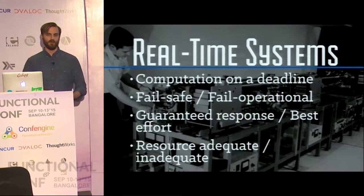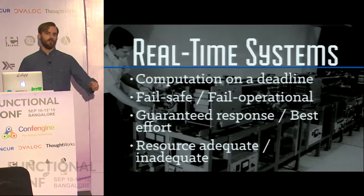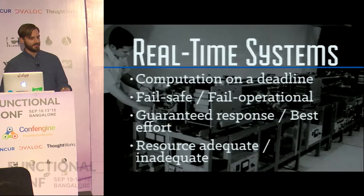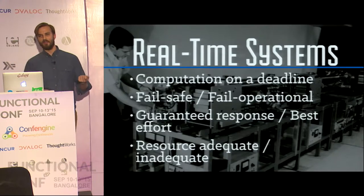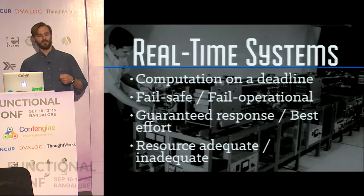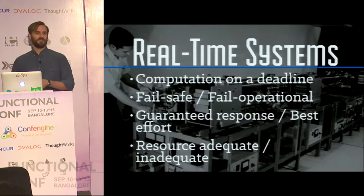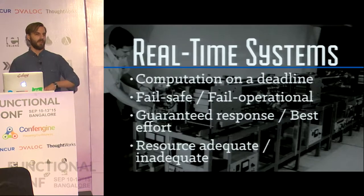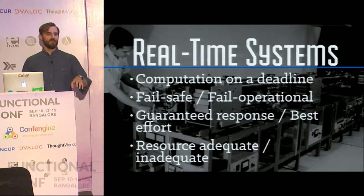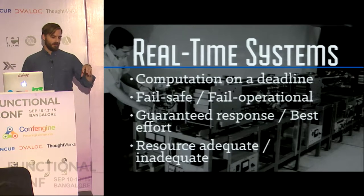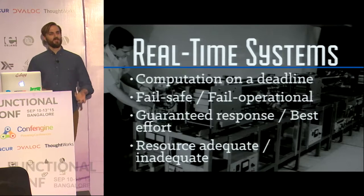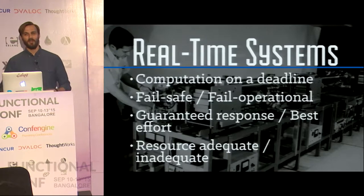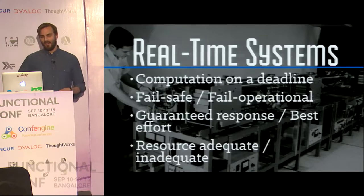Then you have resource-adequate and inadequate systems. A resource-adequate system is one in which at peak load, your real-time system has enough hardware to deal with this. An example is the F-35 — it will kill an entire generation of airmen, but the onboard computer system is remarkably sophisticated and has 55% of its hardware capacity available for future modification. Resource-inadequate is something like our cell phones — they very frequently crash because they don't have enough hardware to deal with peak load.